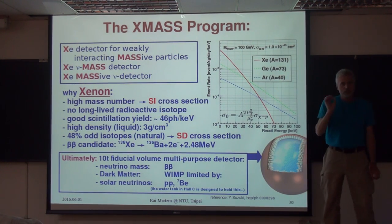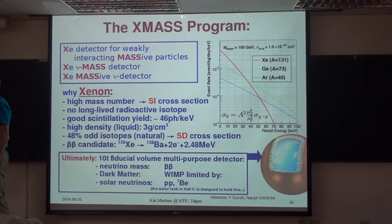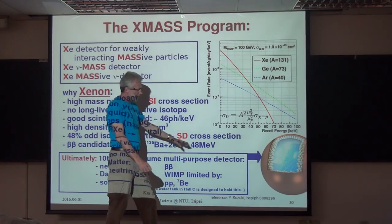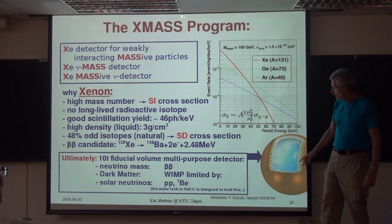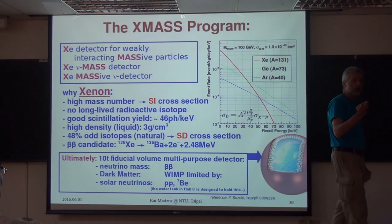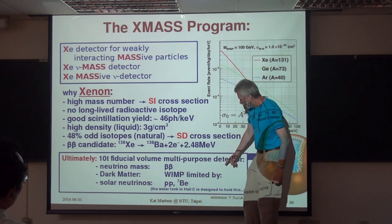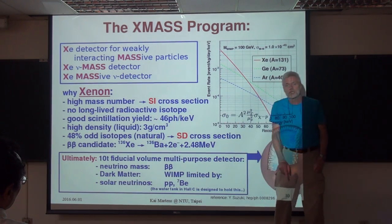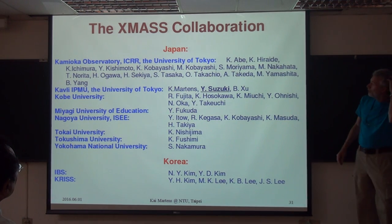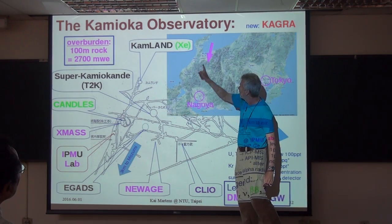We want to find dark matter particles, and we also want to measure neutrinos. Ultimately we want a 10-ton fiducial volume, 24-ton total detector. Xenon has one isotope that is a candidate for neutrinoless double beta decay, and we want to measure that. We want to find the WIMPs, but ultimately we will be limited by solar neutrino interactions. Here is the collaboration. This is Tokyo, Nagoya, and Toyama where I live. I drive 35 kilometers into the mountains every day to go into the mine.